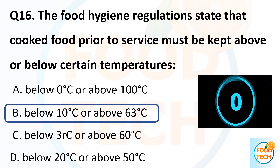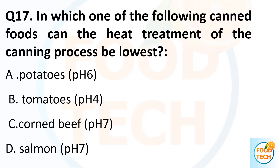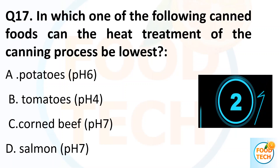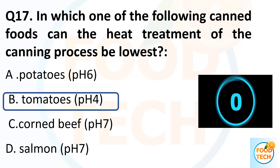Answer B. Below 10 degrees Celsius or above 63 degrees Celsius. Question 17. In which one of the following canned foods can be treated with the lowest level of canning process? A. Potato. B. Tomatoes. C. Corned beef. D. Salmon. Answer B. Tomatoes, pH 4.